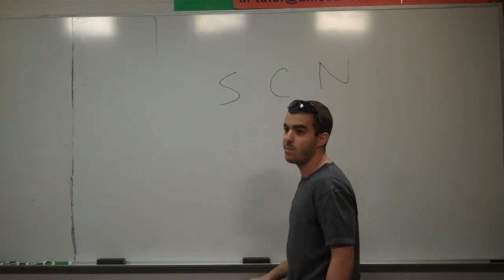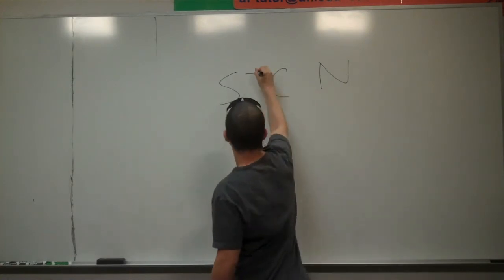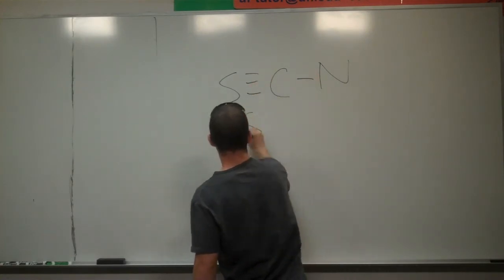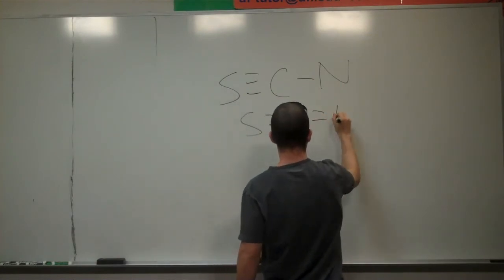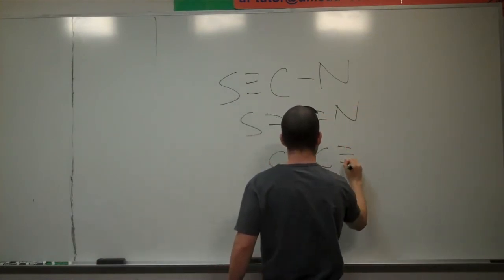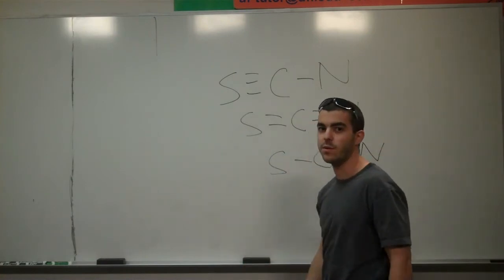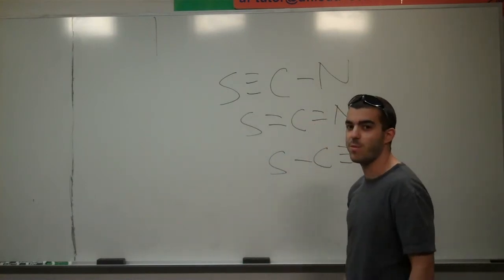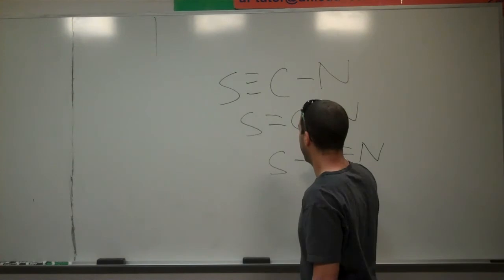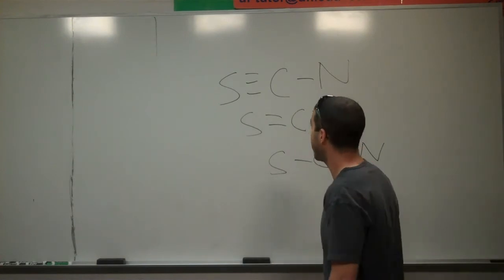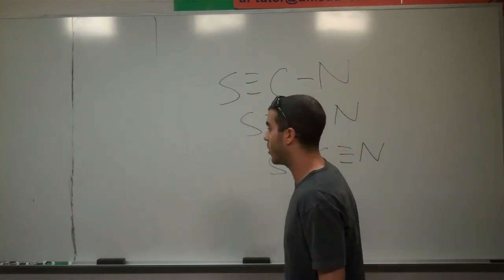So let's start by drawing the three types of resonance structures. Like that. Basically, all three of them are in the situation where carbon exists having four bonds. So now we've got to make sure that we have enough electrons for each one of these.